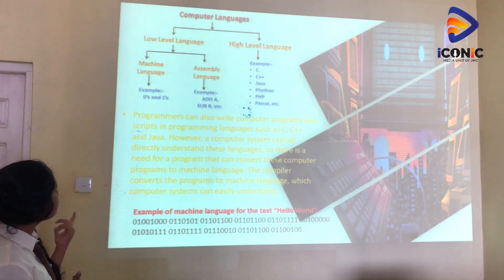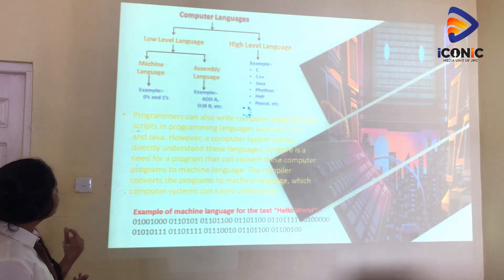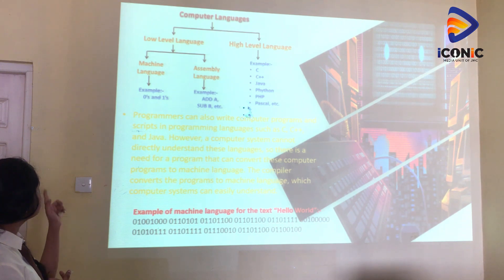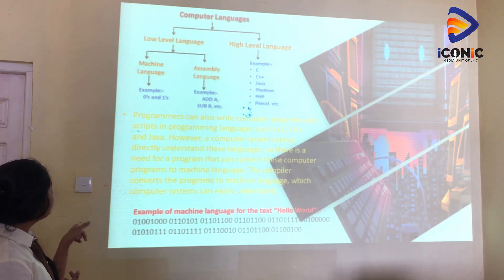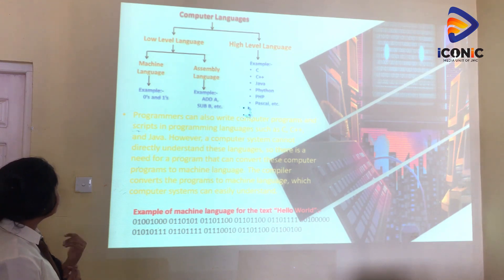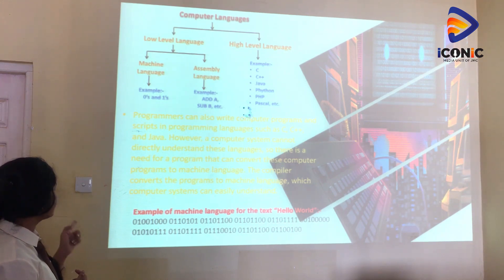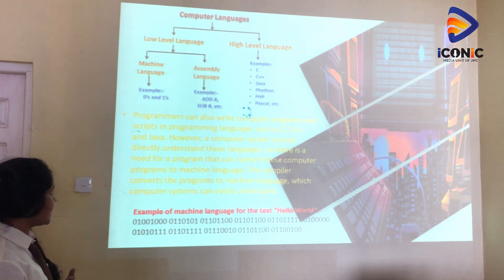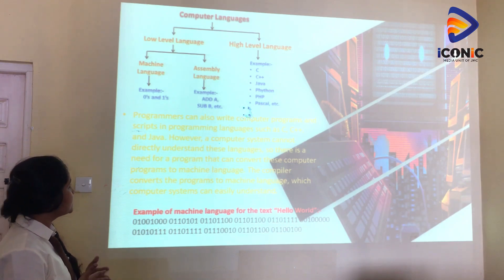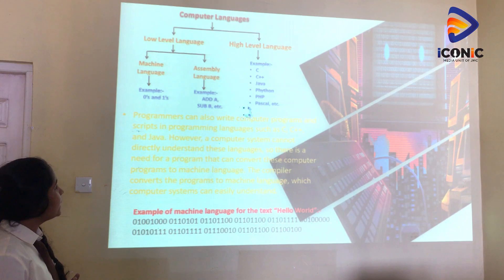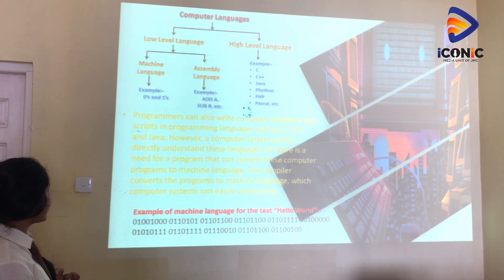In the chart you can see that computer languages may be divided into two types: low-level and high-level. Low-level language is further divided into machine language and assembly language. Examples for machine language are zeros and ones. For assembly language, examples include ADDA, V, and others. For high-level language, examples include C++, Java, Python, PHP, and Pascal. Programmers can write computer programs and scripts in programming languages such as C++ and Java.